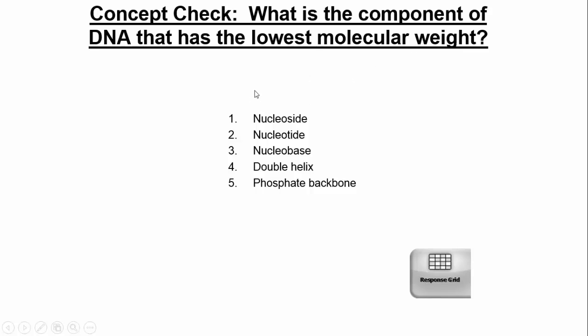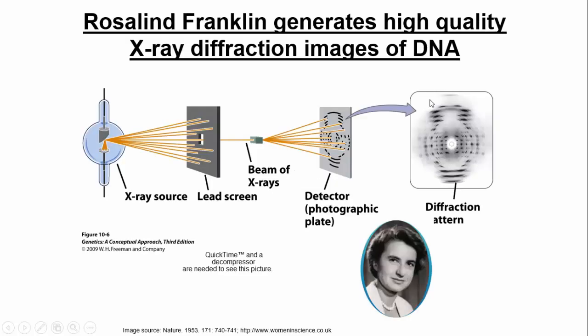Which of these has the lowest molecular weight? Obviously a nucleobase — the smallest component. Now, entering the 1950s, a scientist by the name of Rosalind Franklin was an expert in x-ray diffraction imaging. She was able to shine x-ray sources at DNA and get x-ray diffraction patterns to help show the structure of DNA. She was a key player — it's a very skilled technique. She didn't put the whole puzzle together, but the piece of information she had was vital. You would not be able to know the structure of DNA without her information.